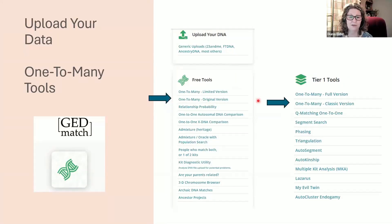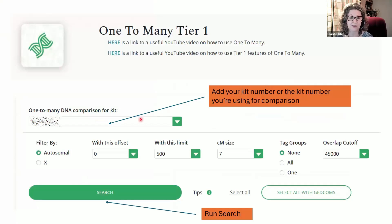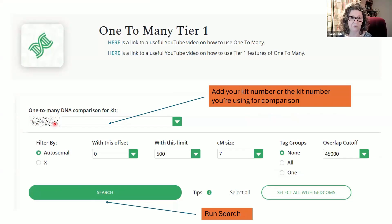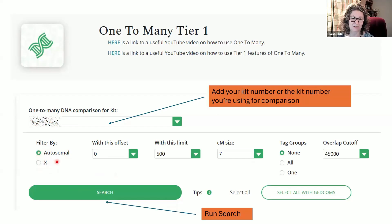I ran the search and put in my kit number. If you are using someone else's kit — for example, if you're doing a project using someone else's DNA — you'd put in their kit number. Alternatively, you could take any kit number from someone you match and put their kit number in to find all of their matches. Kit numbers are extremely helpful for running all the different tools in GEDmatch. I just used the defaults and didn't change anything. If you wanted to find just people who match on the X chromosome, you could change that, but I wanted all autosomal segments.